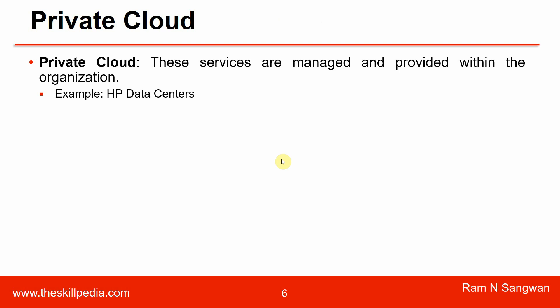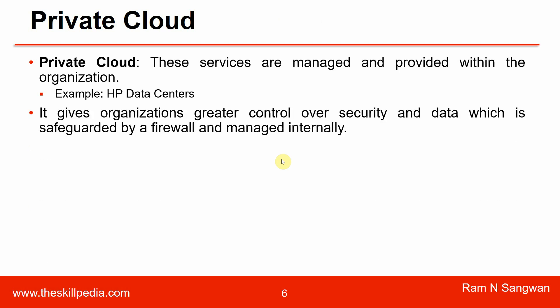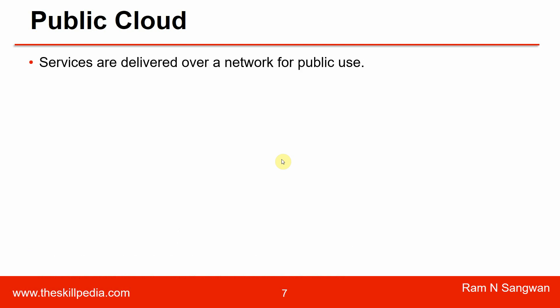The ownership models are private, public, community, and hybrid. Private cloud: these services are managed and provided within the organization, meaning the cloud is created for the company's own employees. For example, HP data centers as private — serving the needs of one particular company. It gives the organization greater control over security and data, which is safeguarded by a firewall and managed internally. It can be hosted internally or externally.